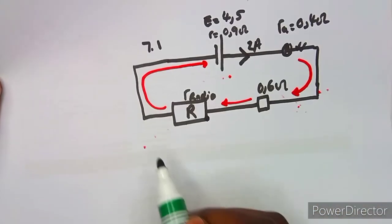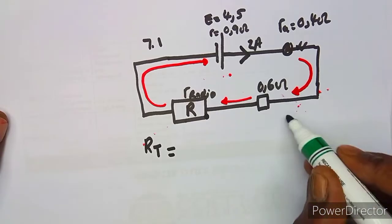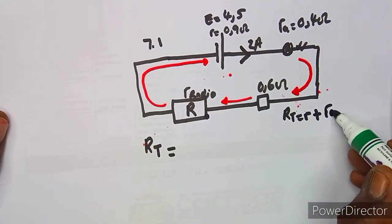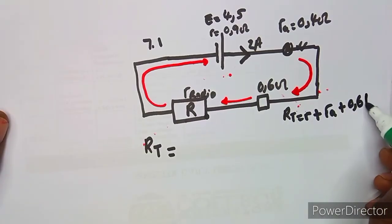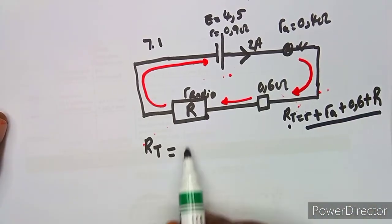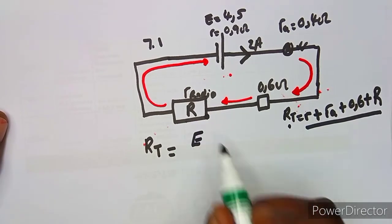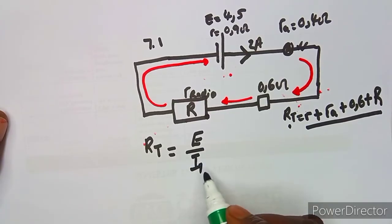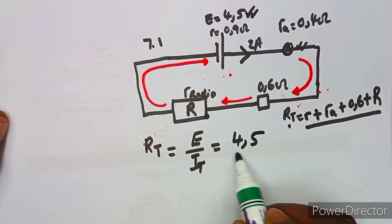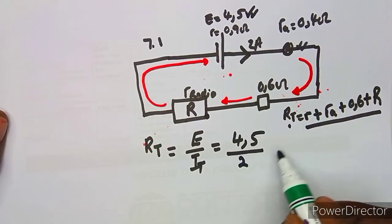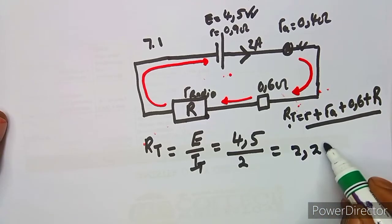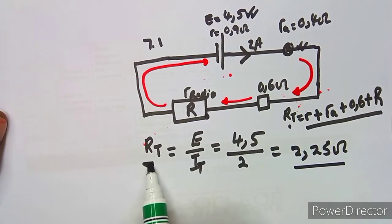To find the unknown resistor, we first calculate the total resistance of the circuit. In a series circuit, the total resistance equals the sum of all resistances. We can also calculate RT from the total EMF over total current: RT = 4.5 V / 2 A = 2.25 ohms.